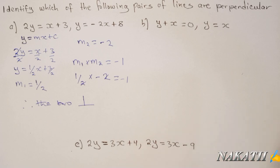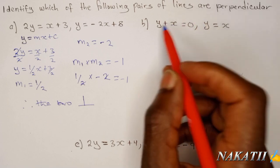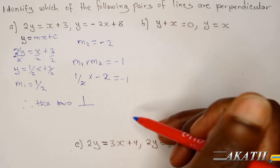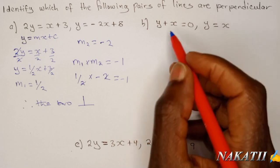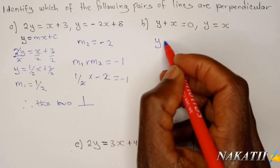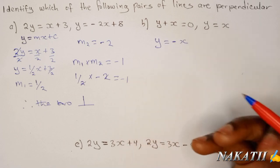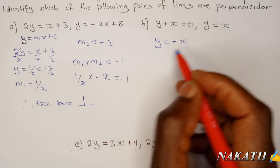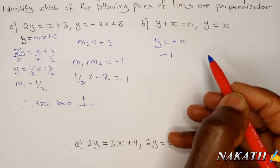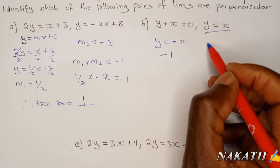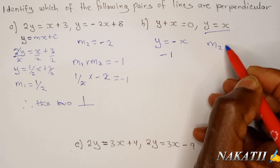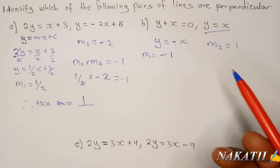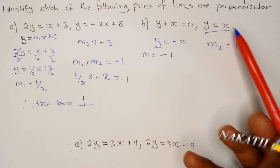Now let us go to the second pair. We rearrange the first equation in the form Y = Mx + C. Taking X to the other side, we get Y = negative X. The second equation is already in that form. So M1, the gradient, is negative 1. And M2, the gradient of the second equation, is 1 — whatever is in front of X.